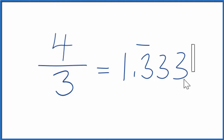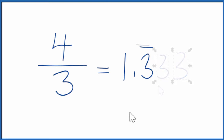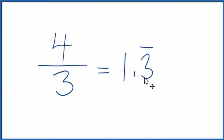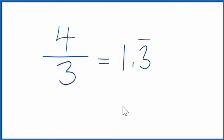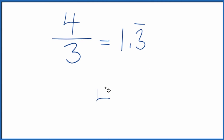The fraction four-thirds is equal to 1.3 with the three repeating. You could also take the four and divide that by three using long division. So we have four divided by three.